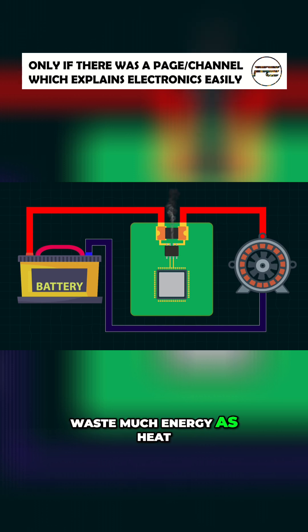We don't want to waste much energy as heat, so the shunt resistor value should be very small, typically between 1 to 5 milliohms, or even lower if currents are higher for current shunt resistors.